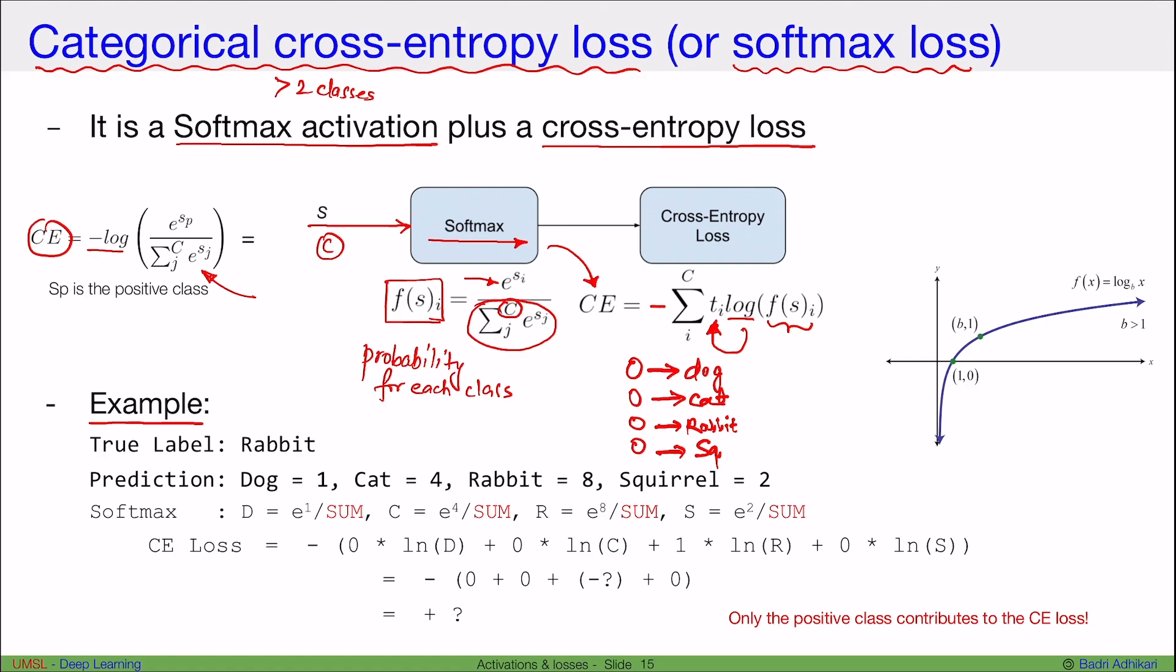Now, let's say the output of these neurons, well, they actually don't produce probability. They only produce probability after we apply the softmax. Let's say the raw outputs are dog has output of 1, cat 4, rabbit 8, and squirrel 2. And also in this case, let's say that the true label or the actual image, in this case actual data, is that of a rabbit.